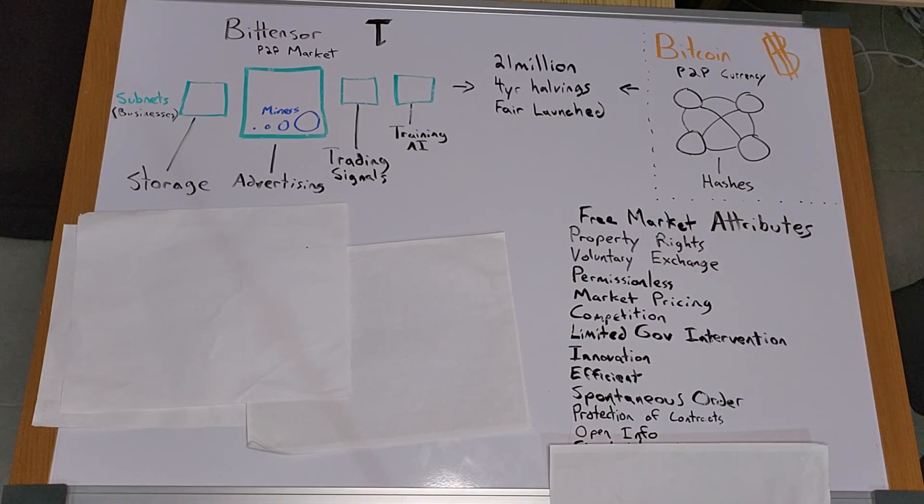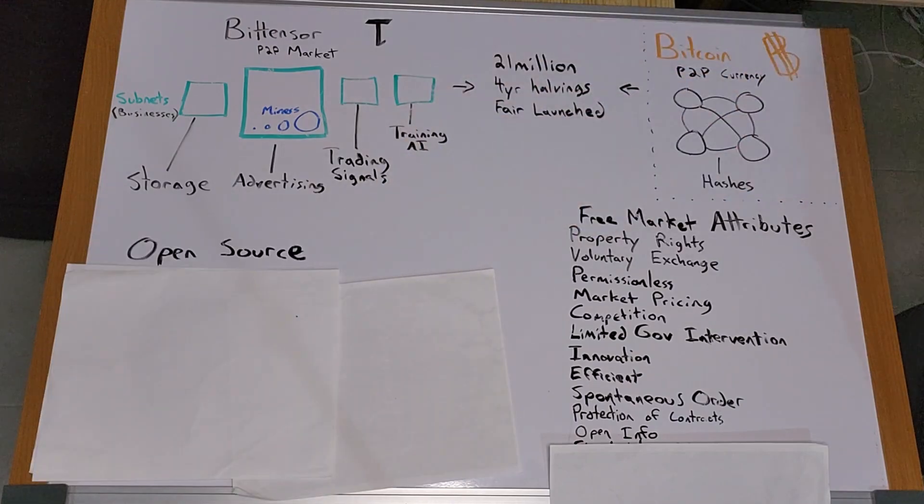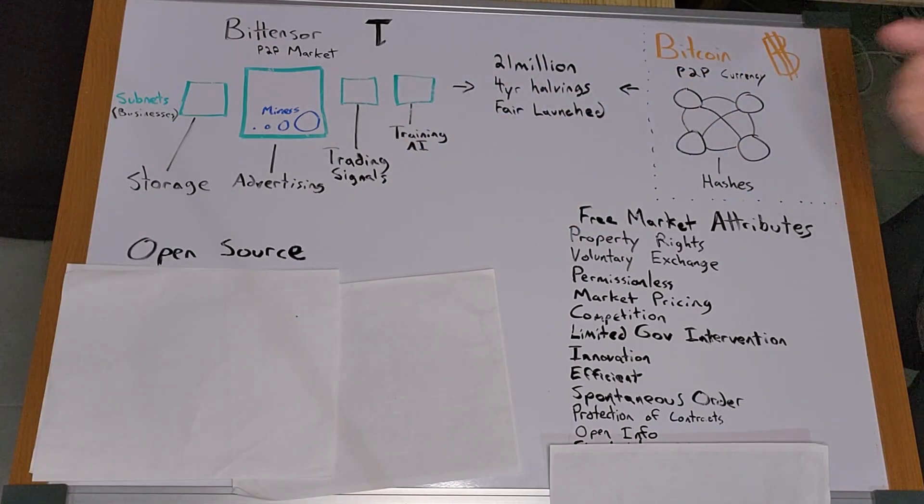Open information. Market participants have access to information about prices, products, and services, allowing them to make informed decisions. Being open source and a cryptocurrency, there's very little hidden in the network. It's all open to scrutiny, more so than any other market.